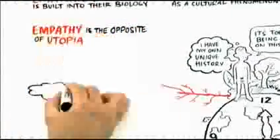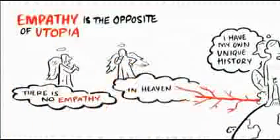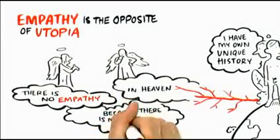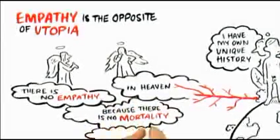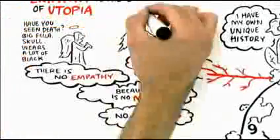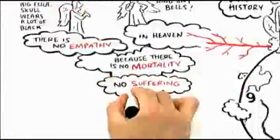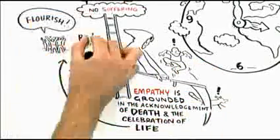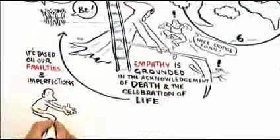Empathy is the opposite of utopia. There is no empathy in heaven because there's no mortality. There's no empathy in utopia because there is no suffering. Empathy is grounded in the acknowledgement of death and the celebration of life and rooting for each other to flourish and be. It's based on our frailties and our imperfections.